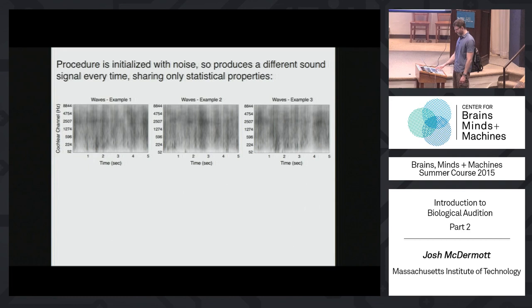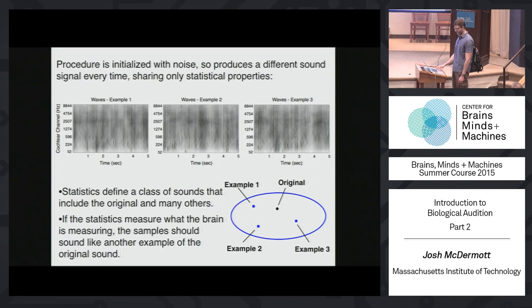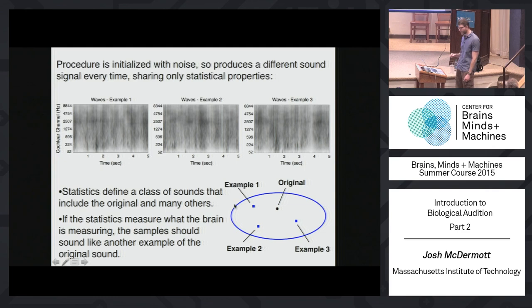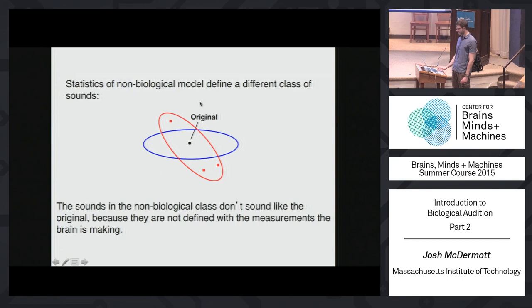The notion is that we're initializing this procedure with noise, so the output is a different sound in every case, sharing only the statistical properties. The statistics we measure and use for synthesis define a class of sounds that include the original, as well as a whole bunch of others. When you run the synthesis, you're generating one of these other examples. If the statistics are measuring what the brain is measuring, these examples ought to sound like another example of the original sound — you're generating an equivalence class.